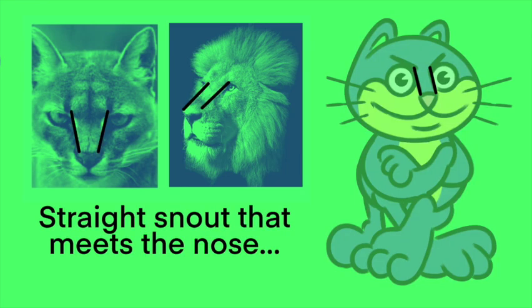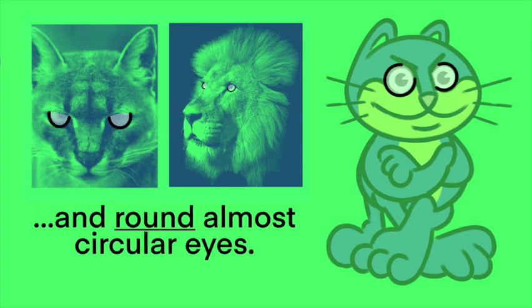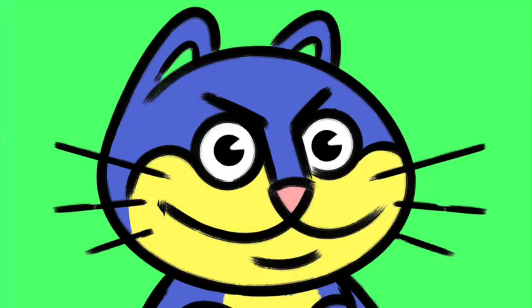In the case of cats, whether big or small, they always have a straight snout that meets the nose, and round, almost circular eyes like saucers.